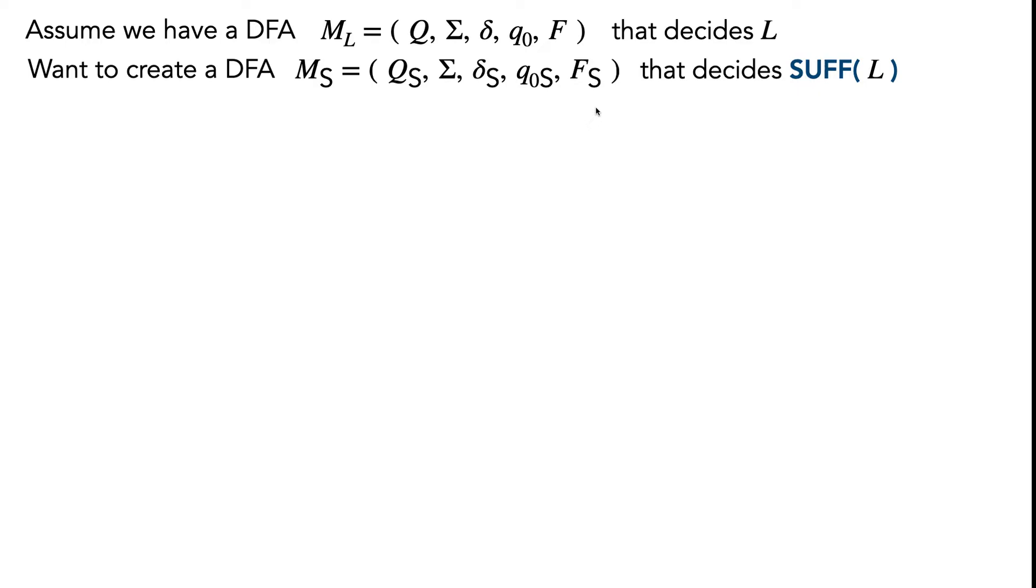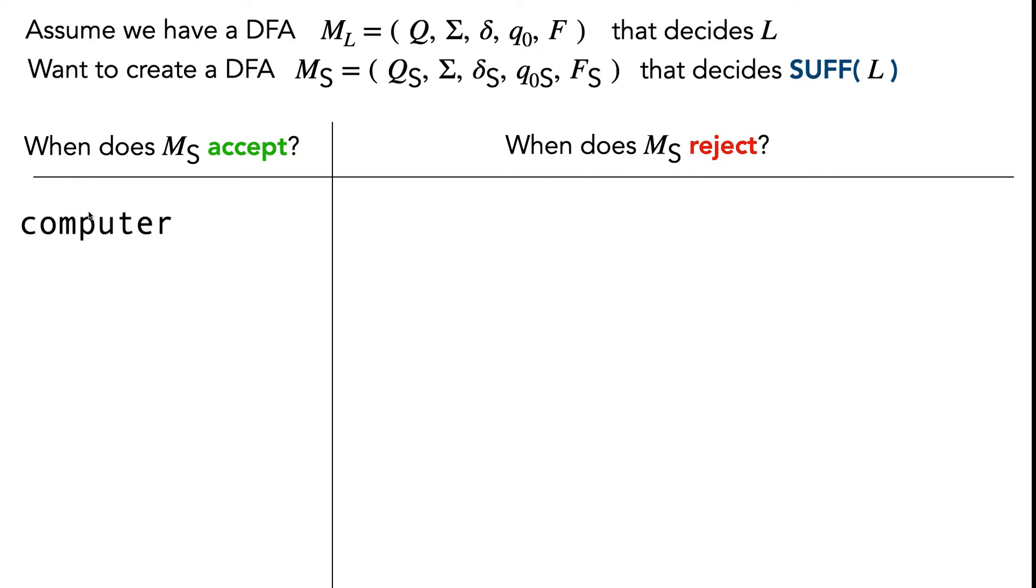It often helps to do a couple of examples and get a feel for when M_S should accept and when M_S should reject. If you've got a string and you know it's in L, and you check all of its proper suffixes and they're all not in L, then we know that our machine M_S should accept.